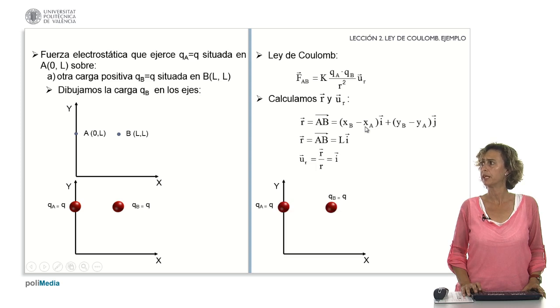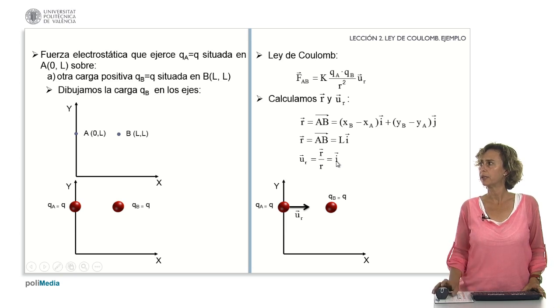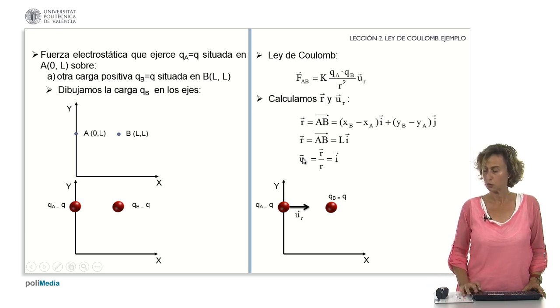The unit vector will be this vector R divided by its modulus, which modulus is L. And so the unit vector is i. We draw it. What is left now? To take into account the values of Q sub A and Q sub B and substitute them in this expression. We will have to take into account also the value of U sub R and R, of course.